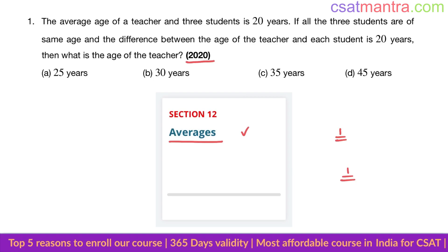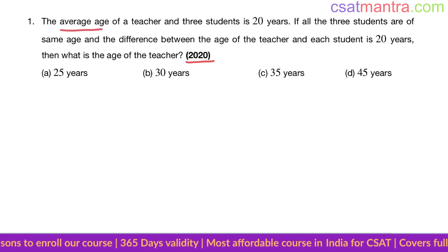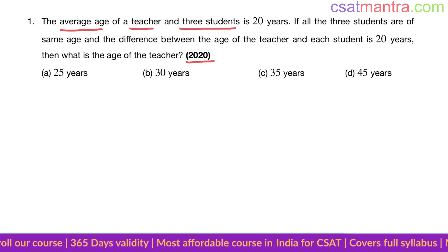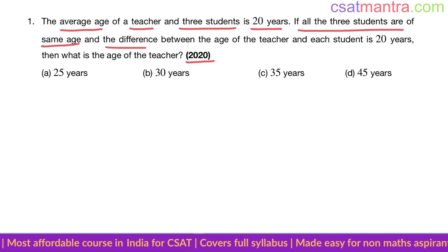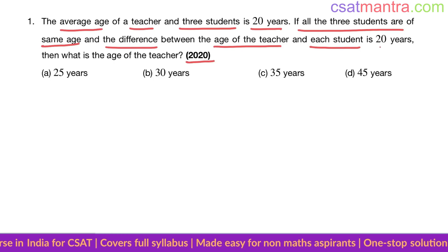The average age of a teacher and three students is 20 years. If all the three students are of same age and the difference between the age of the teacher and each student is 20 years, then what is the age of the teacher?